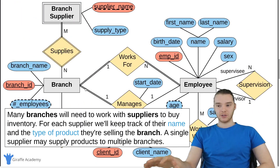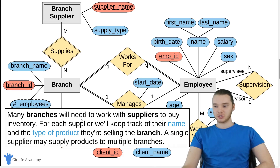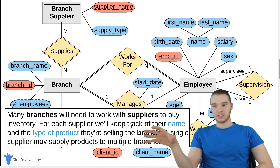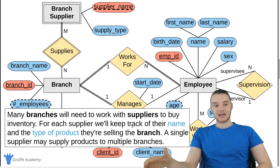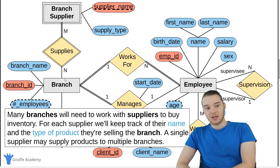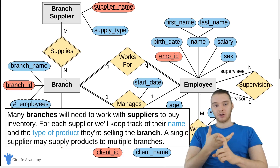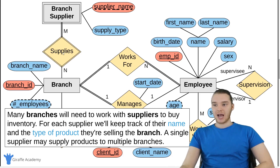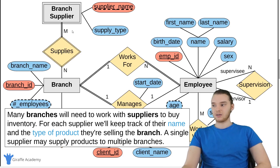Many branches will need to work with suppliers to buy inventory. For each supplier we'll keep track of their name and the type of product they're selling the branch. A single supplier may supply products to multiple branches. This is an example where we use a weak entity — branch supplier — with a supplier name and a supply type, connected to the branch via an identifying relationship. We can say the branch supplier supplies a branch, and a branch gets supplied by a supplier, with the cardinality ratios shown.